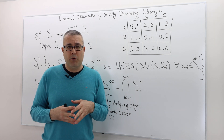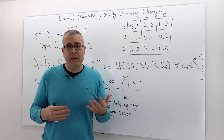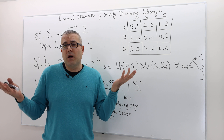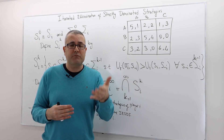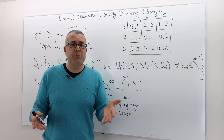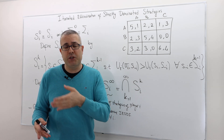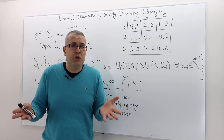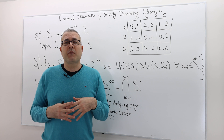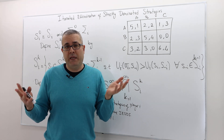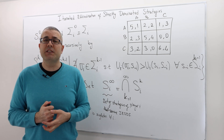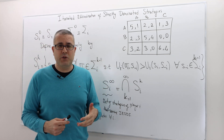At some point, we're going to stop because there will be no further elimination — there will be no strictly dominated strategies among the remaining strategies. If for each player there's a unique remaining strategy, we call this game solvable, and that surviving strategy profile is the solution of the game. Unfortunately, not all games are solvable.